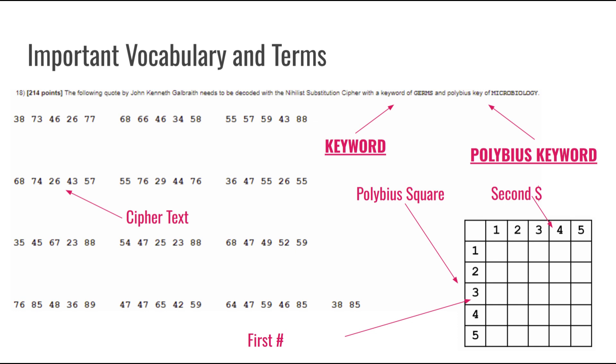Now looking at the vocabulary let's first take a look at the question. In the question we can see that they give us a keyword and also polybius keyword. This keyword will be used for going above the cipher text which is shown as the rows of numbers and the polybius keyword will be going in the square in the bottom right. This square is known as the polybius square where you will read and transcript numbers when solving the cipher. This square is read from the left then top to get your numbers.